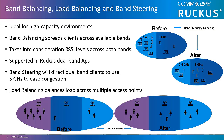Band balancing, load balancing, and band steering are methods available to help maximize wireless LAN performance. Band balancing spreads client devices across the available bands of 2.4 and 5 gigahertz. Load balancing spreads the load across available access points. Band steering will direct dual-band clients to use 5 gigahertz, and the percentage of clients that are directed is configurable within the system.